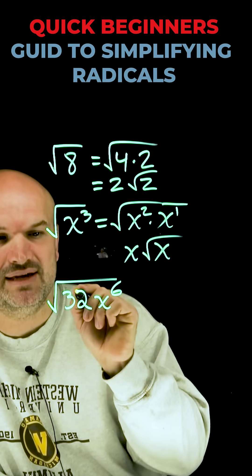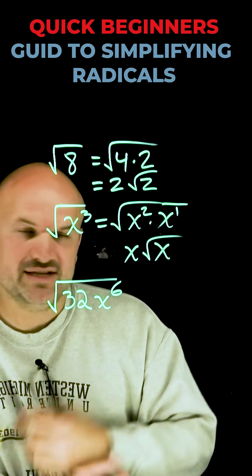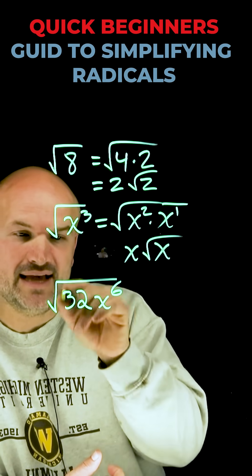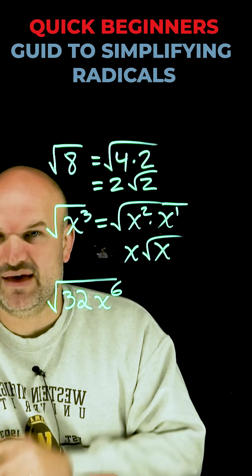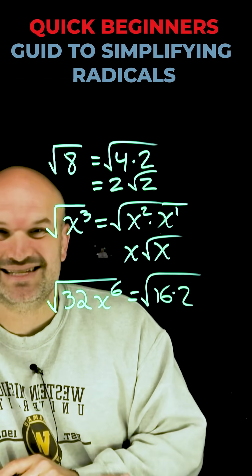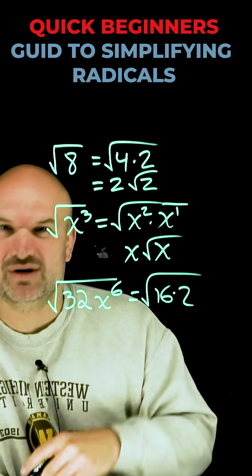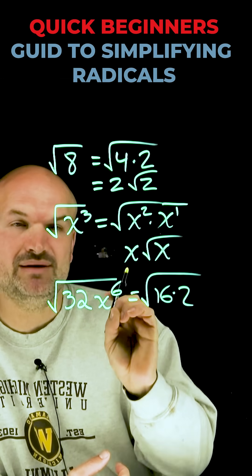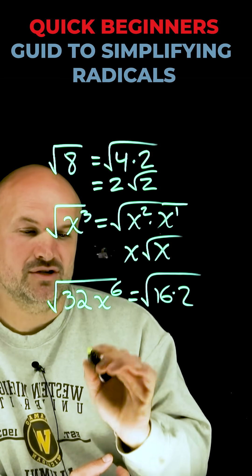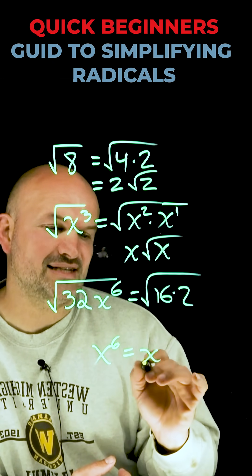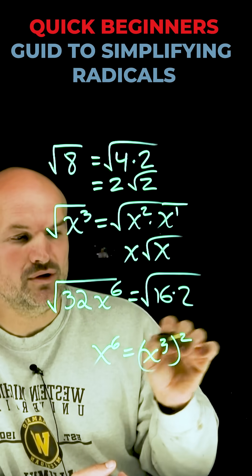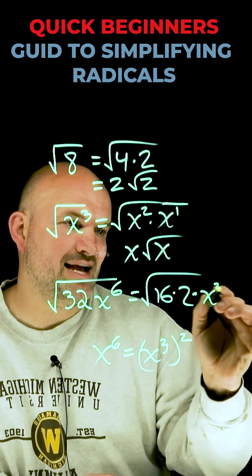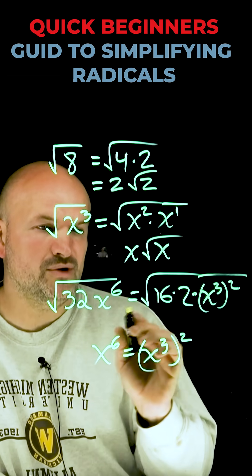So what do we do when we have a number and a variable expression? Well in this case we're just going to treat everything separately. What is the largest square number that we can rewrite with 32? Well that would be 16 times 2. And what about x to the 6? We want to use the power rule — I always want to rewrite something to the second power. So if I rewrite x to the 6 as x cubed squared, I know that the power rule means I multiply to give me 6. So therefore I can rewrite that as x cubed squared, which now I can take the square root of.